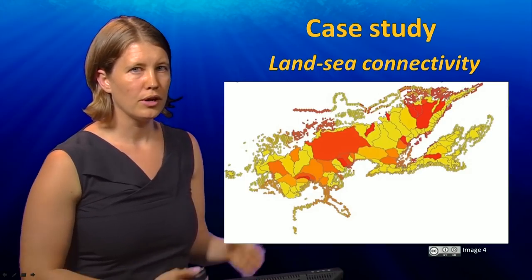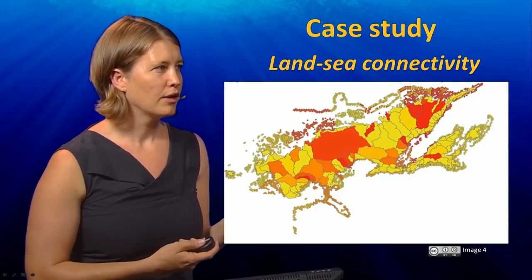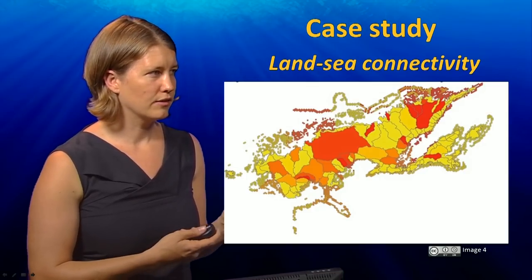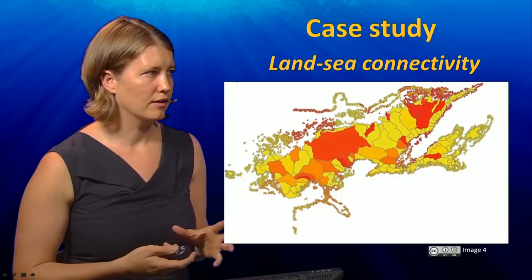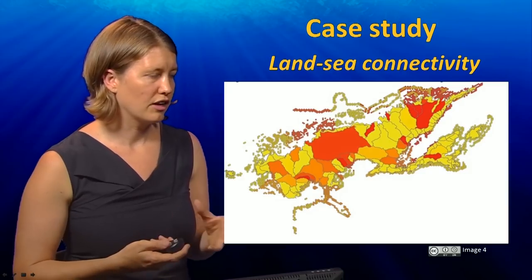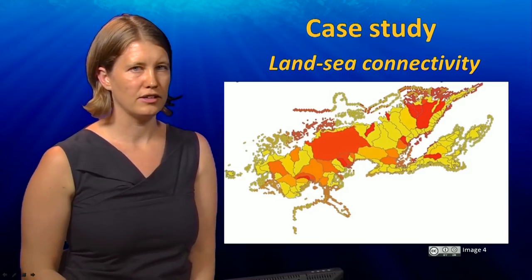These priority areas are shown here in red, where the small hexagons are the coral reefs and the large polygons are catchments in a major island in Fiji.